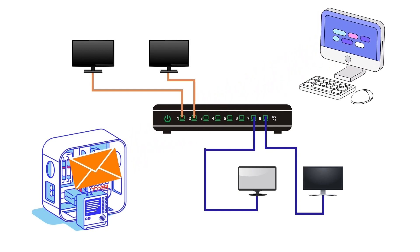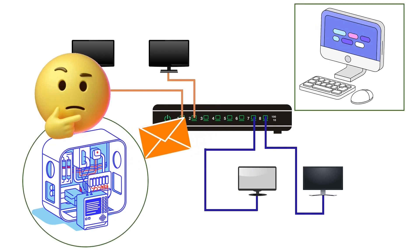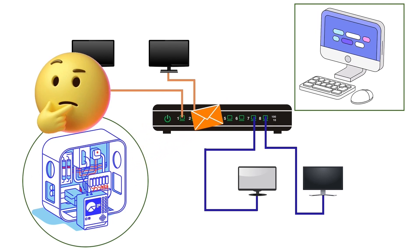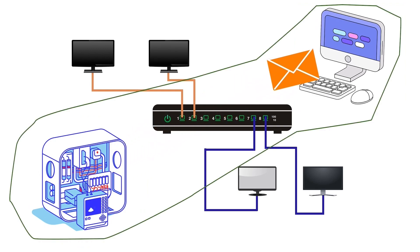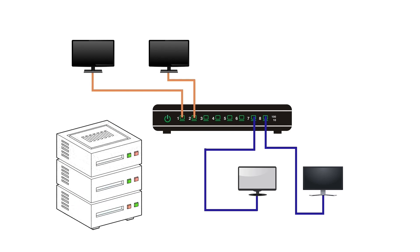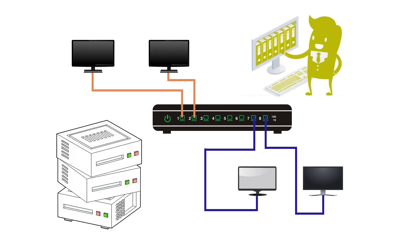If we configure a DHCP server in one VLAN and DHCP clients in another VLAN, the clients' request messages will never reach the DHCP server. DHCP works only when both the DHCP server and clients are in the same VLAN. If we have multiple VLANs in a network, we have to configure a separate DHCP pool for each VLAN.